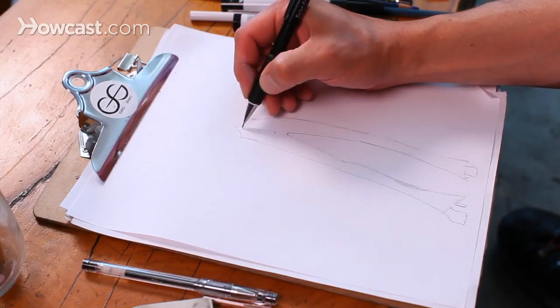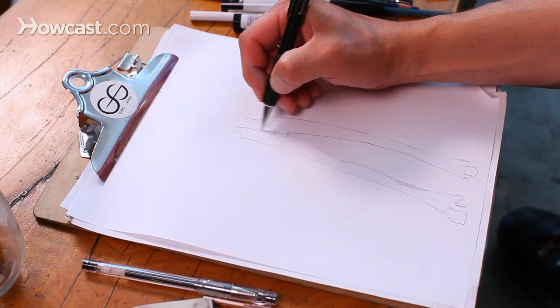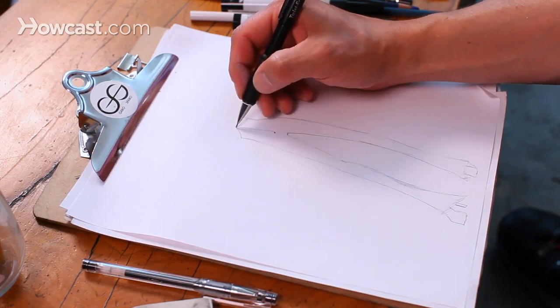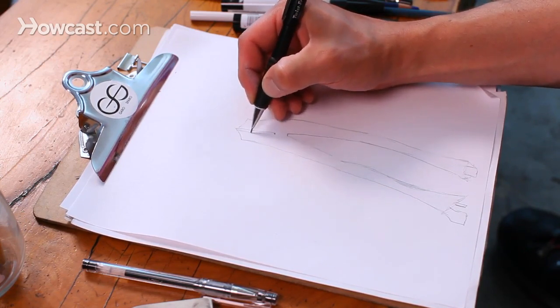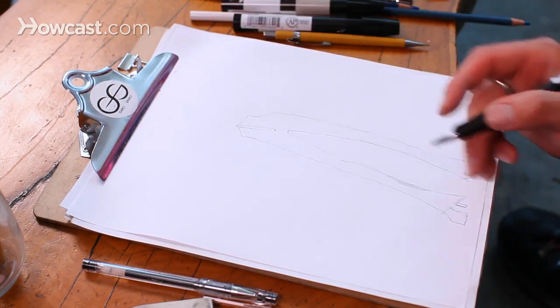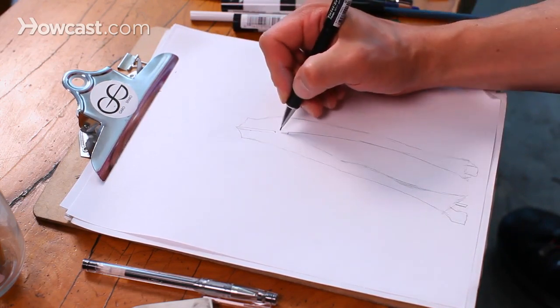One thing that's really important with pants is to have your front fly or whatever your closures are. So this particular pair of pants is going to have a front fly, and you just basically indicate that by drawing down the center of the pant and then creating with a dotted line the stitch line that will create where the zipper will end.